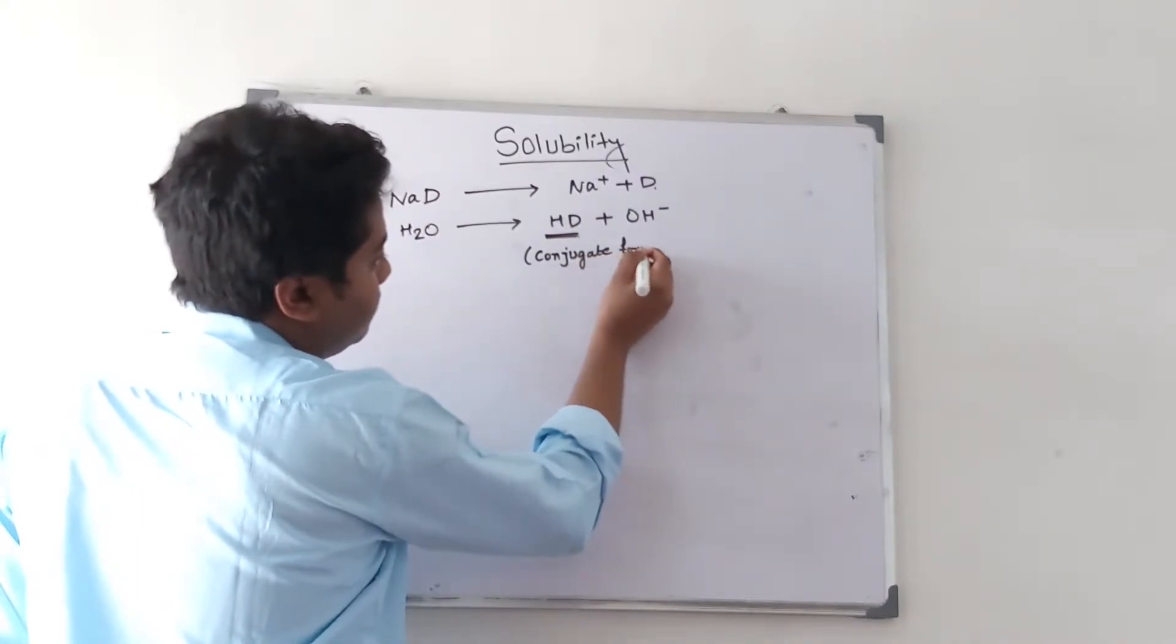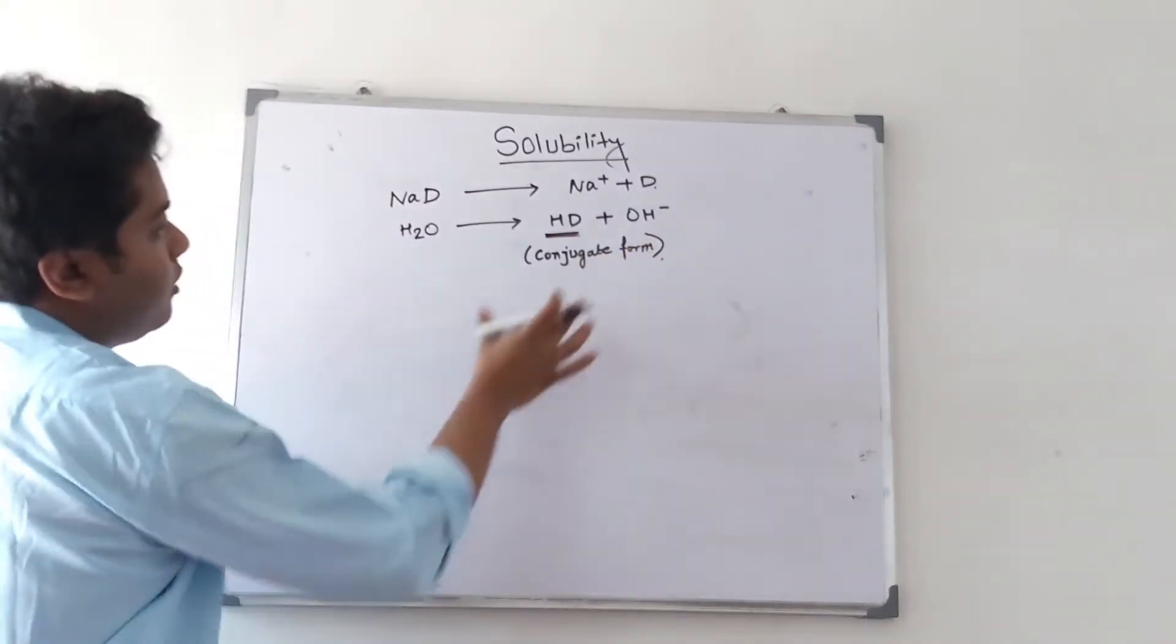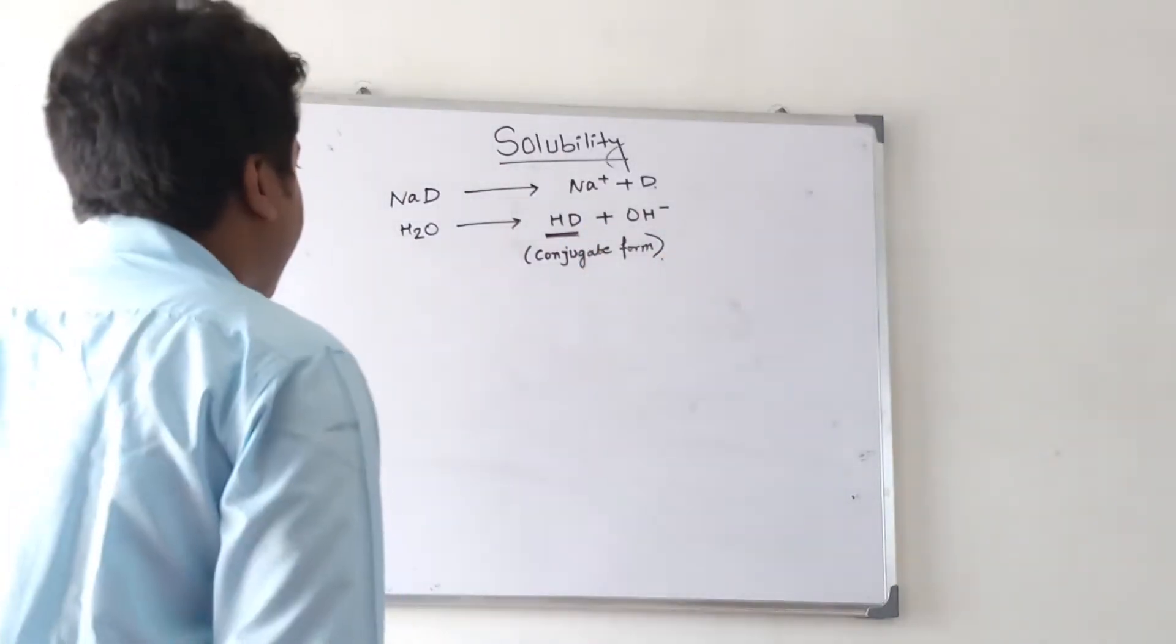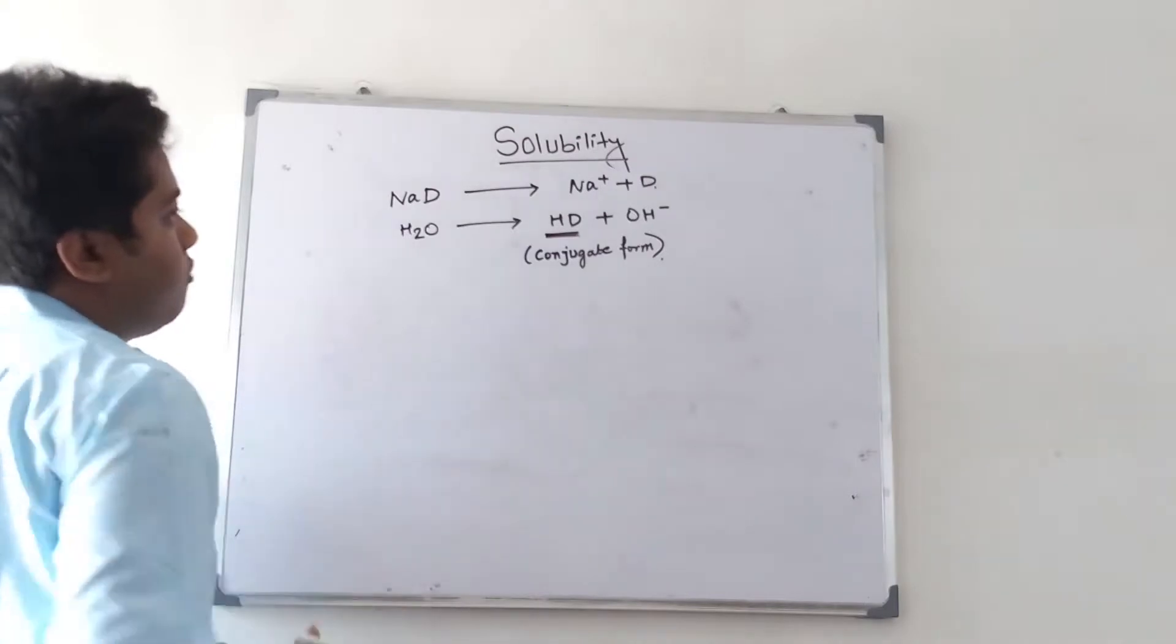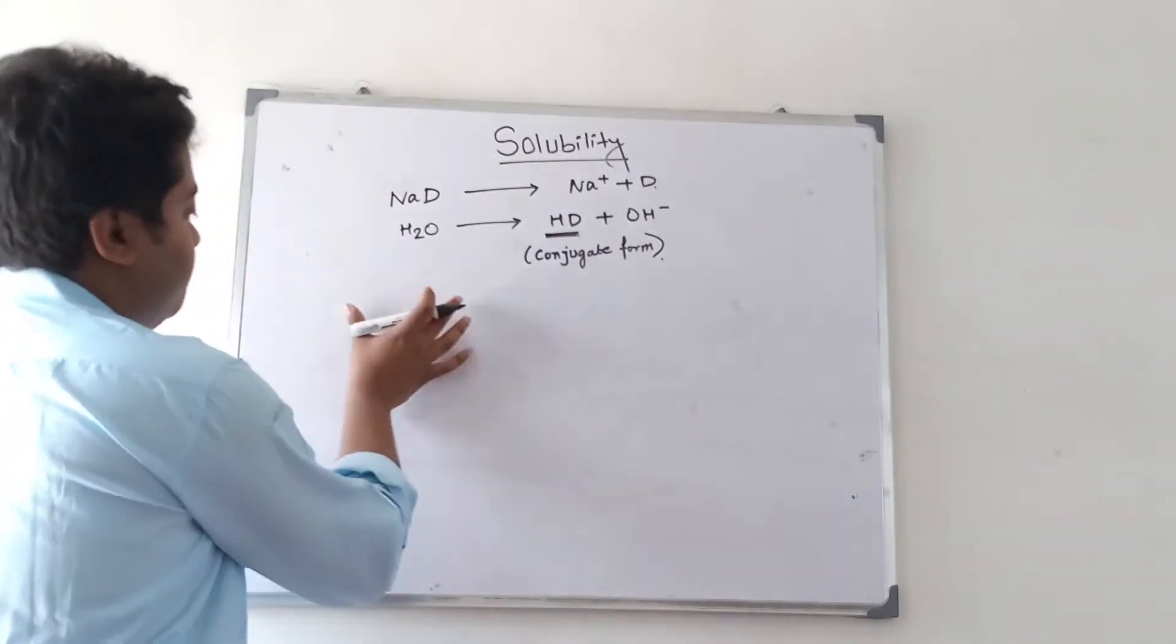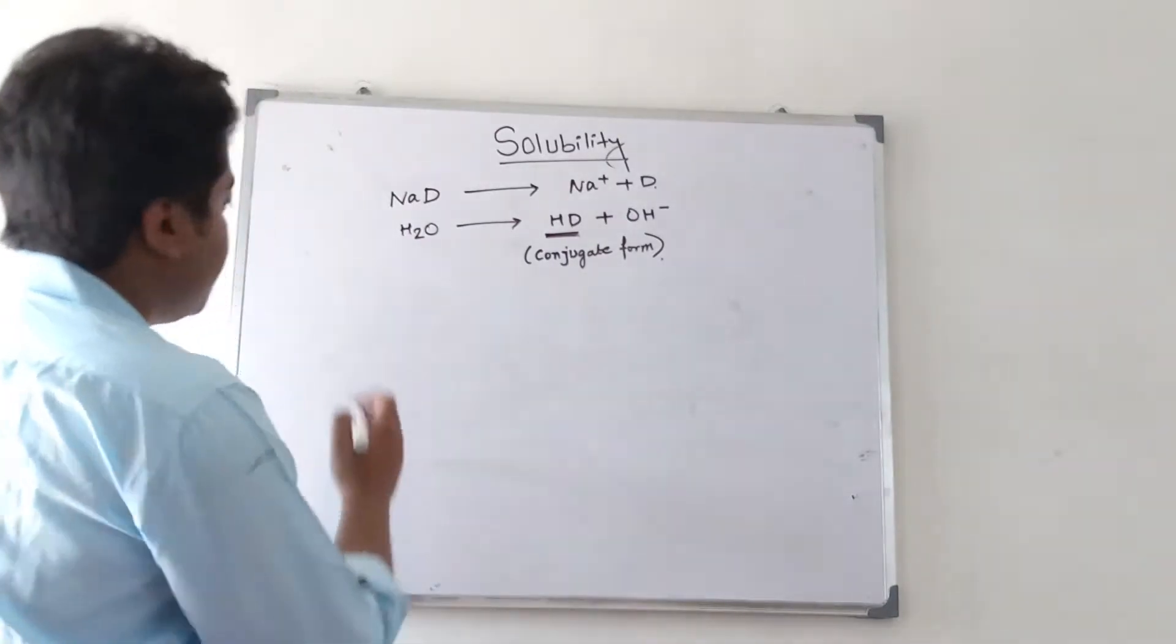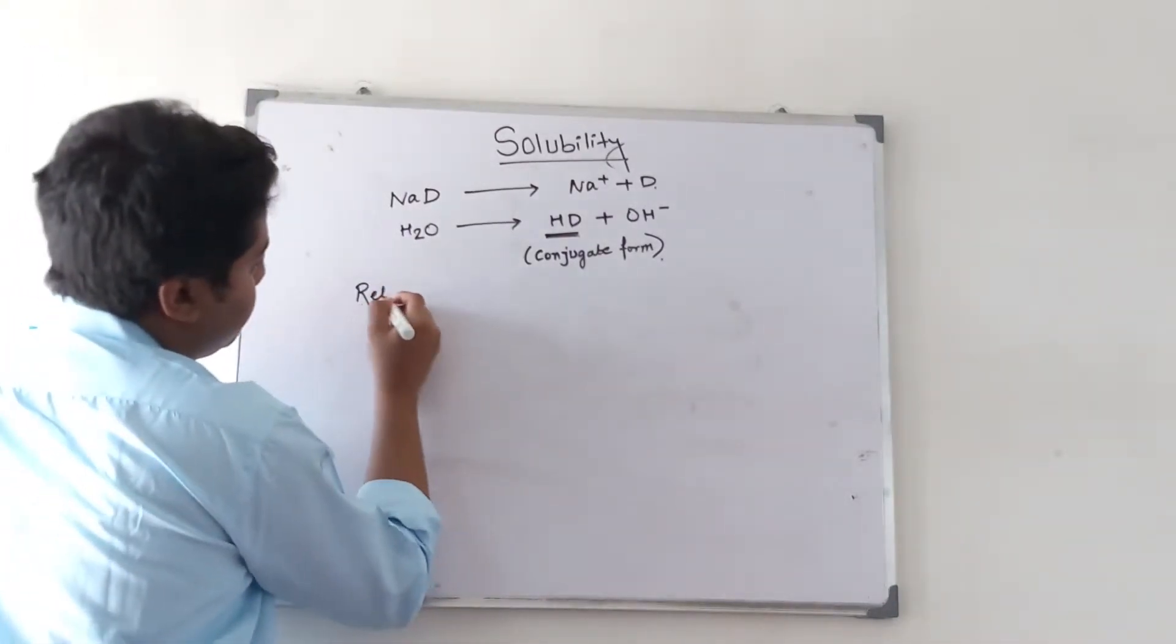This is the conjugate form which is aqueous soluble. We know that solubility depends on pH. So how is the relationship between solubility and pH?